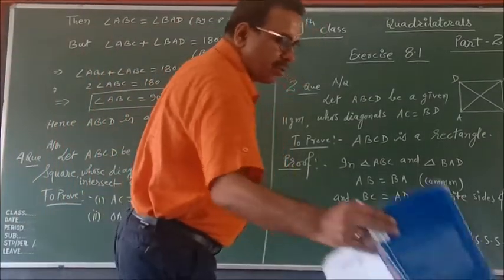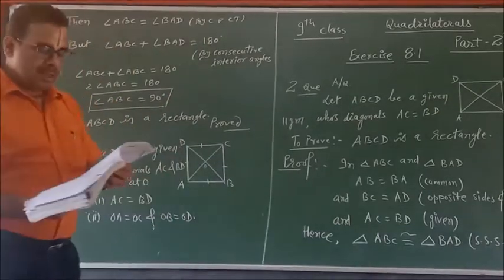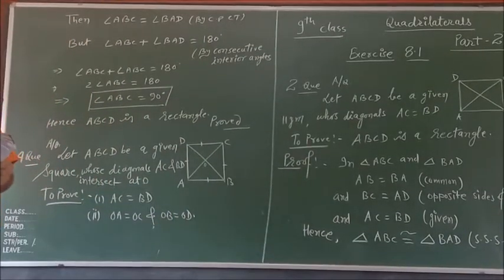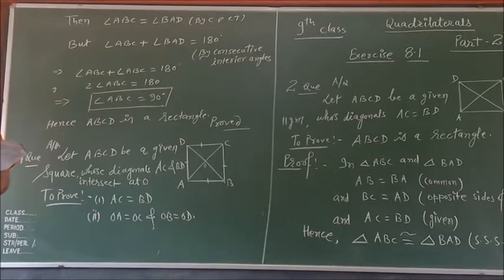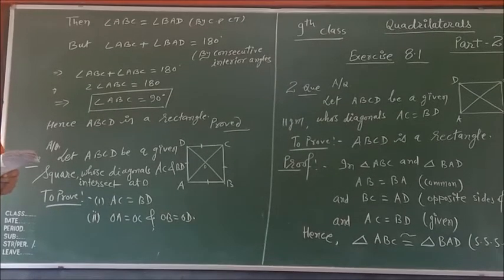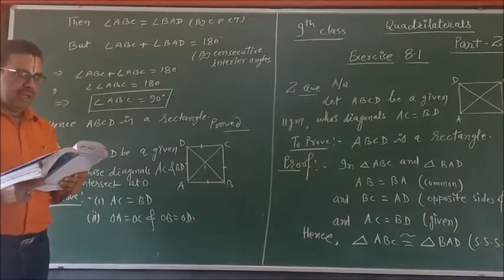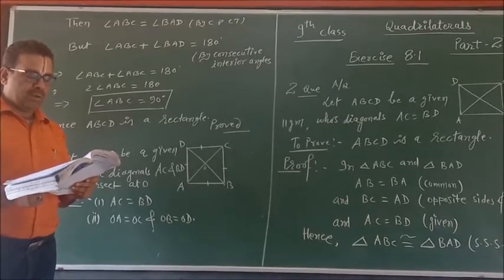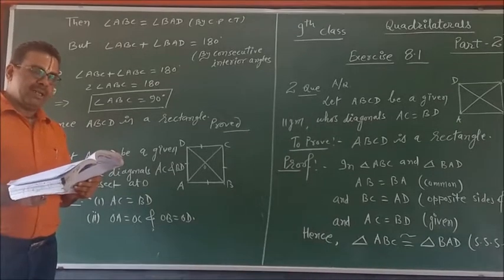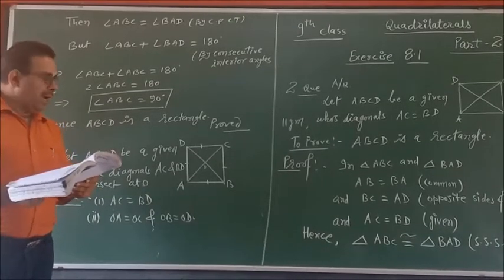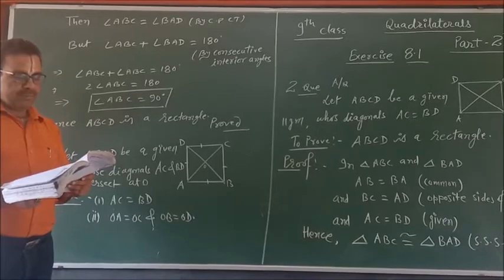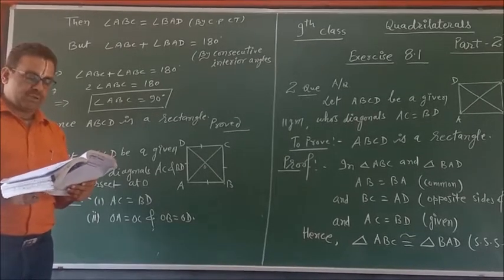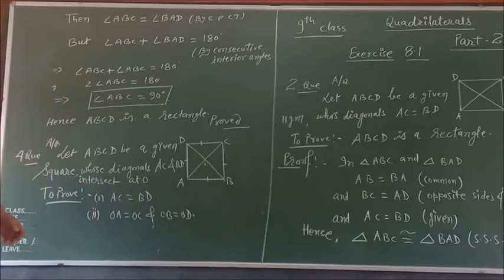Again here, question number 4. All questions you will solve with the help of theorems. As you know the properties of parallelogram and some theorems. See here in your fourth question. Show that the diagonals of square are equal. We are given here square. And we need to prove first, diagonals of square are equal to each other, and bisect also at right angles.